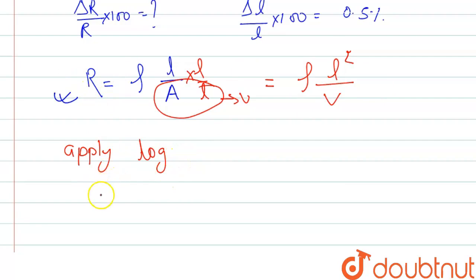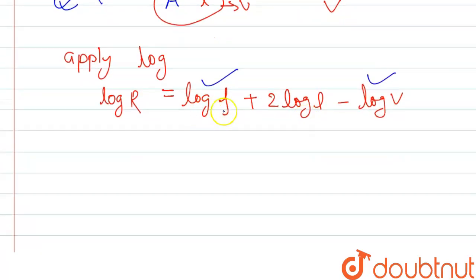This will be log R = log ρ + 2 log L - log V. The 2 will come here from the square. If we see here, these two terms are constant, so if we differentiate this, they will be zero. Now we are taking differentiation.